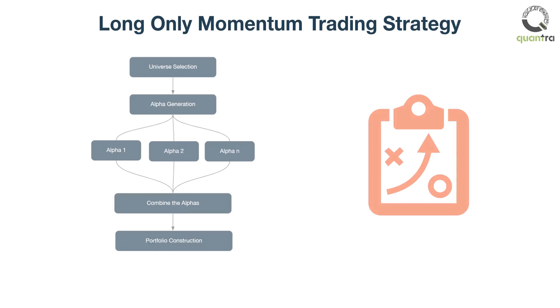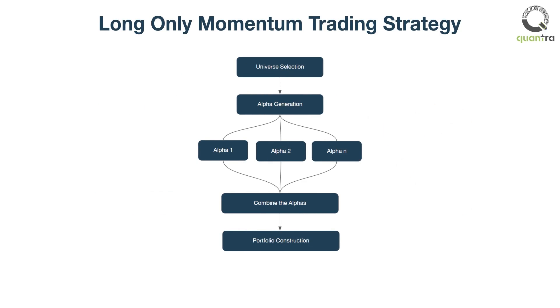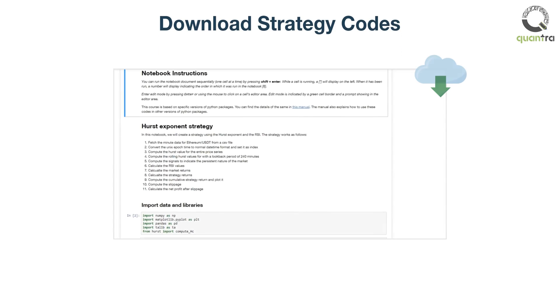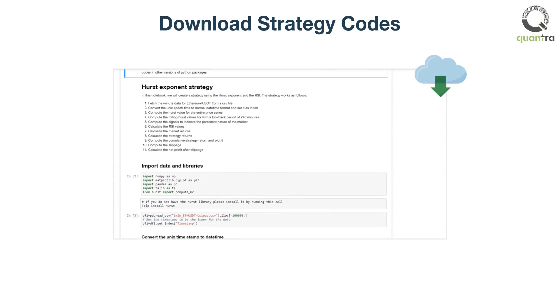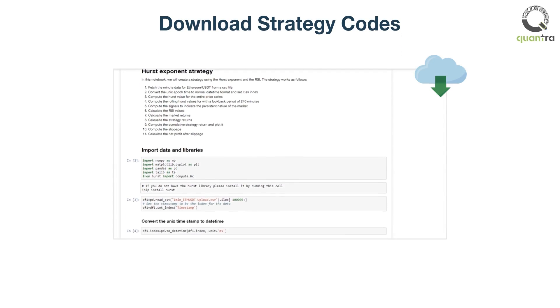The final section covers a quant strategy framework. This framework is used to develop a long-only momentum trading strategy on a group of cryptocurrencies. All these strategies are available as downloadable Python codes which you can tweak and use in your own trading after thorough back testing and analysis.